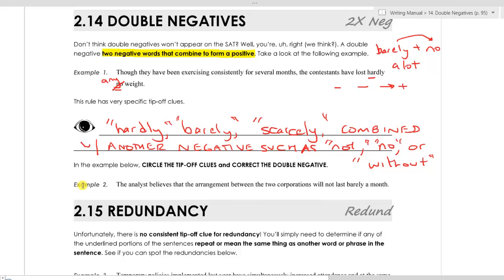Let's go ahead and do one more example, example two. Read it all the way through, and determine if there's a double negative. If there is, make a correction. In example two, we have the analyst believes that the arrangement between the two corporations will not last barely a month. So there's that combination of the two negatives.